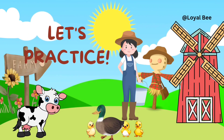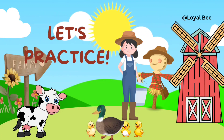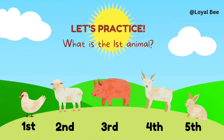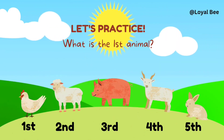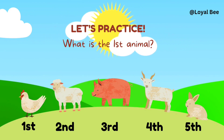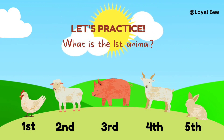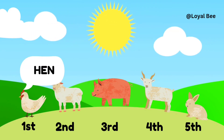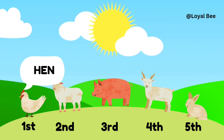Let's practice now. Look at the animals. What is the first animal? Hen — the first animal is hen.